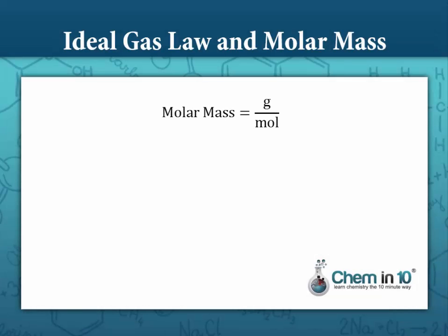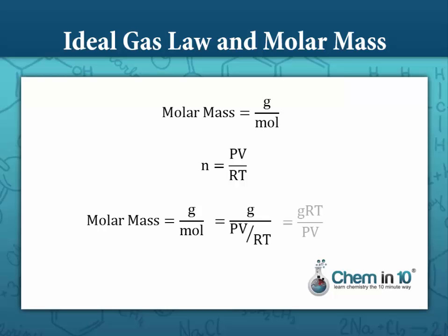Remember that molar mass is grams per mole. If I know the mass of the gas I have and I use the ideal gas law to figure out moles, I can take the mass and divide it by that number of moles. To streamline that into one equation — since moles is PV over RT — gram divided by PV over RT gives us molar mass equals grams times RT over PV.